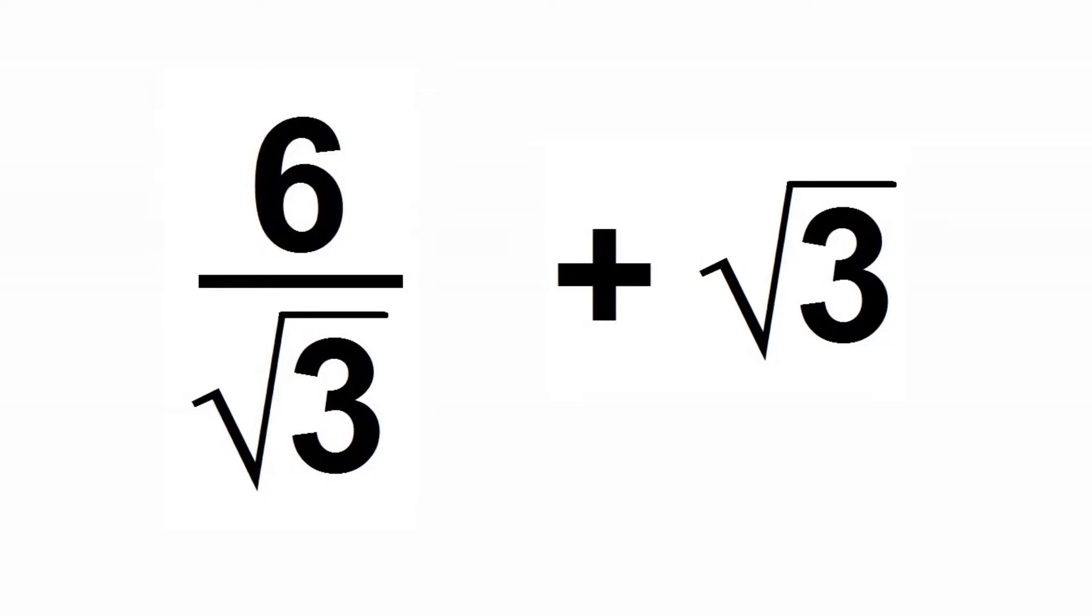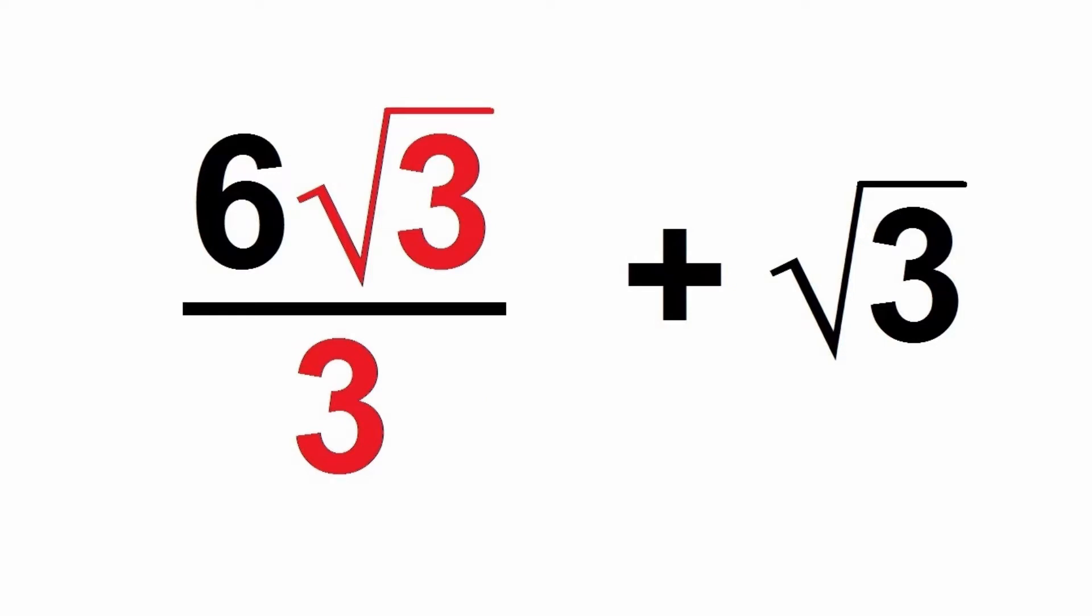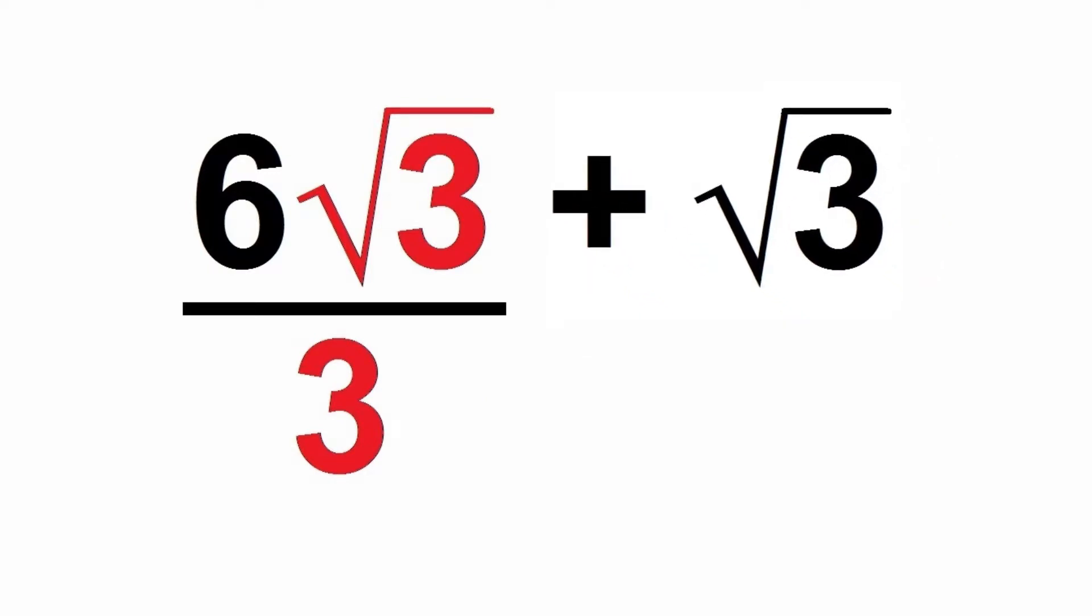But let's see what happens when we rationalize the denominator of this fraction. If we follow the rule, all we have to do is multiply both the numerator and the denominator of the fraction with the square root of 3. We'll get 6 root 3 over 3 plus another root 3. Now that the denominator has been rationalized, we can actually cancel out the 6 on the top with the 3 on the bottom.